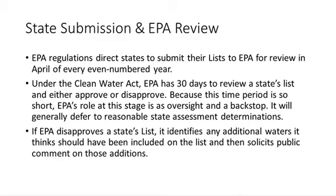The fact that the statute only gives us 30 days to act is an important signal about our role in that process, which is fundamentally one of oversight and as a backstop. We typically defer to reasonable state assessment determinations when possible and when supported by the science. However, if EPA does disapprove a state's list, that initiates a process whereby EPA will identify and add any impaired waters to the state's list that EPA thinks should have been included, going through its own public comment process, which will ultimately result in any changes to the list that EPA deems appropriate.